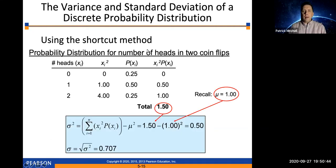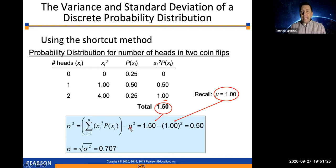Here it is using the shortcut method. Values of the random variable are 0, 1, and 2. Square those to get 0, 1, and 4. Multiply those squares by the corresponding probabilities: 0 times 0.25 is 0; 1 times 0.5 is 0.5; 4 times 0.25 is 1. These values add up to 1.5. So sigma squared equals 1.5 minus the square of the mean: 1.5 minus 1 squared equals 0.5 — the same answer. The square root of 0.5 is still 0.707.